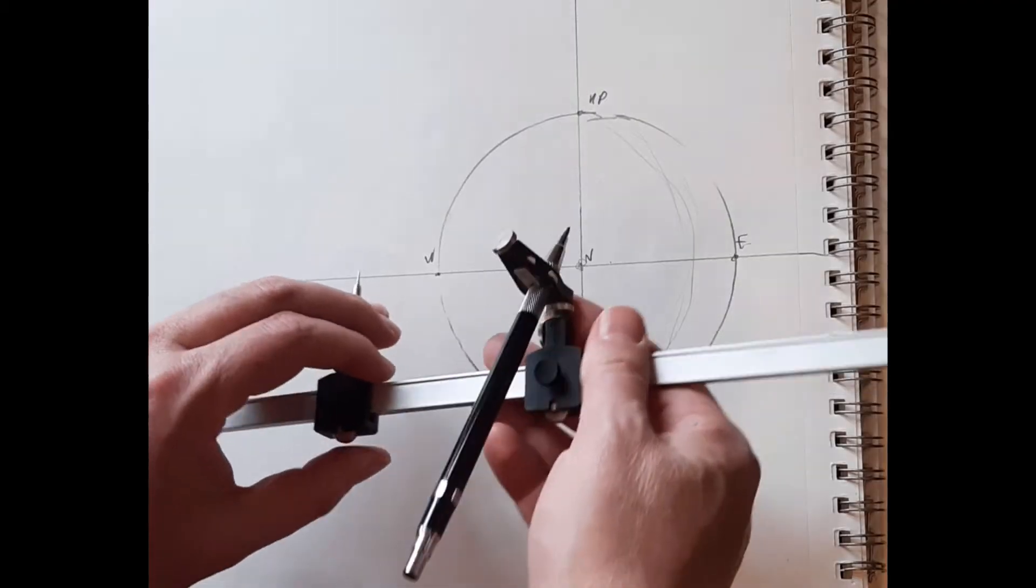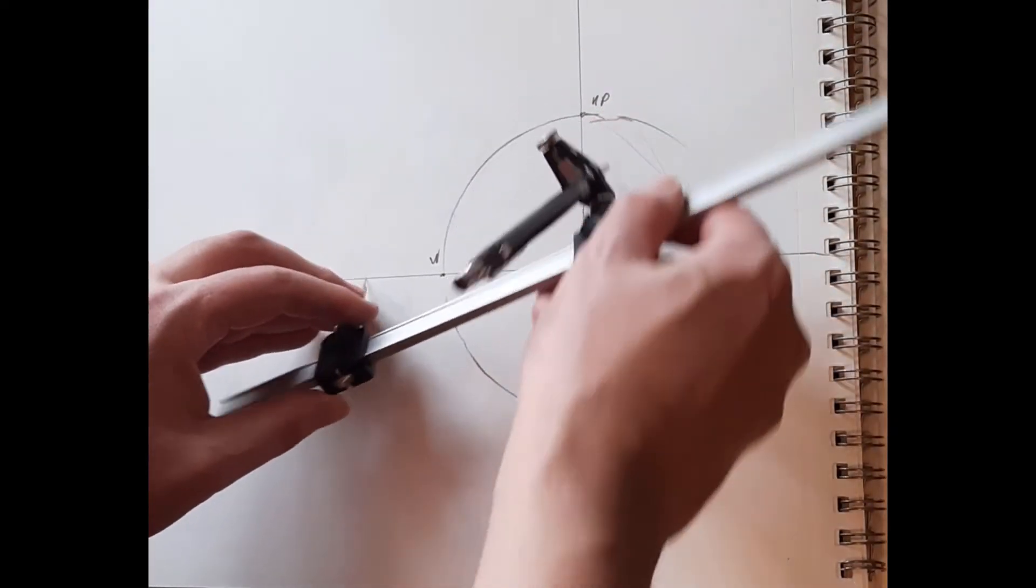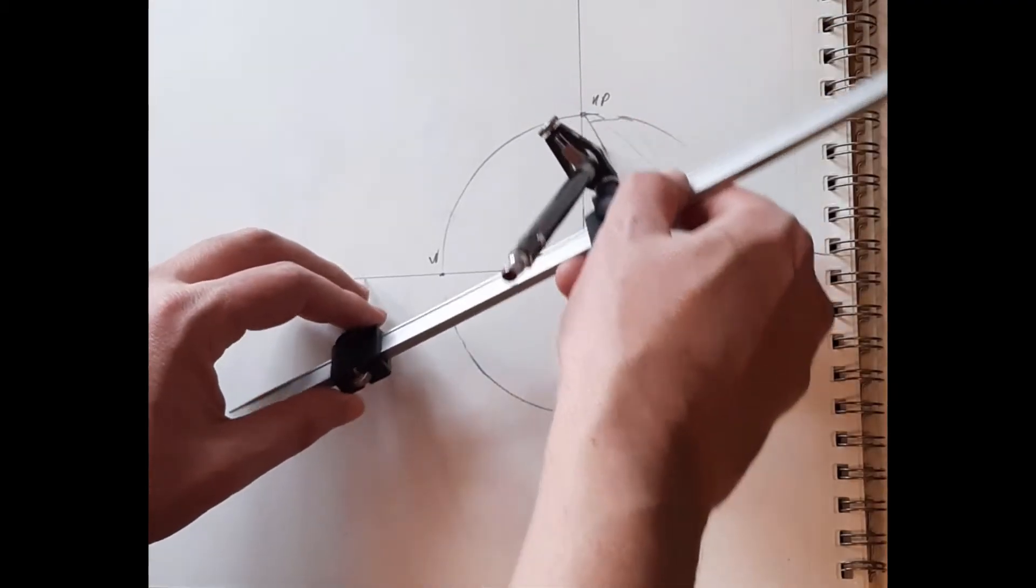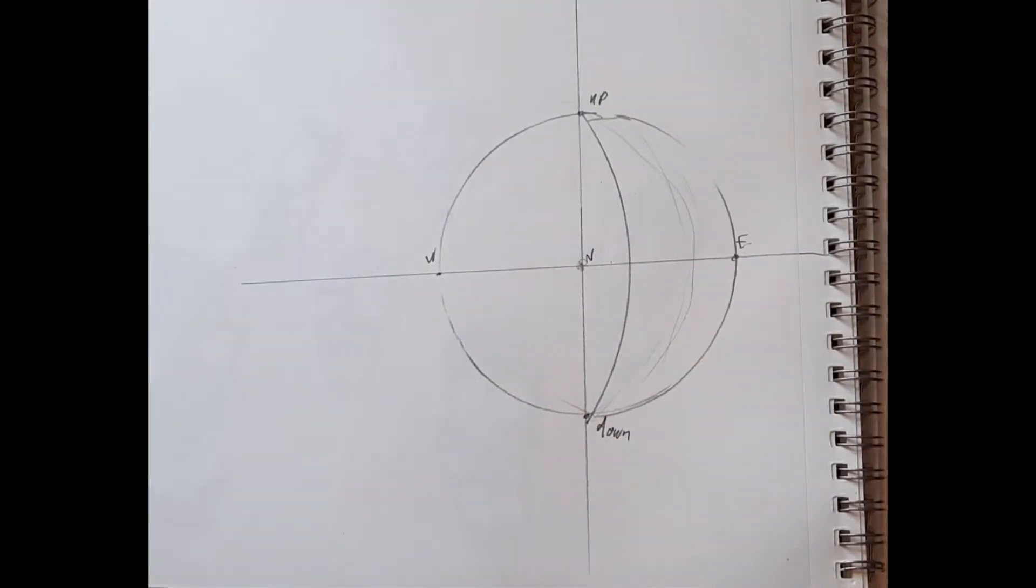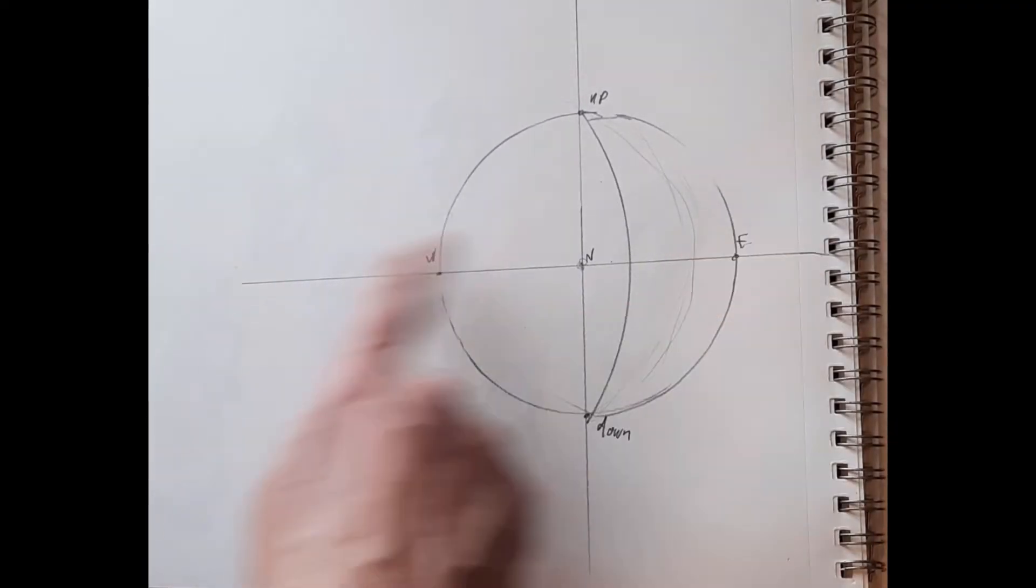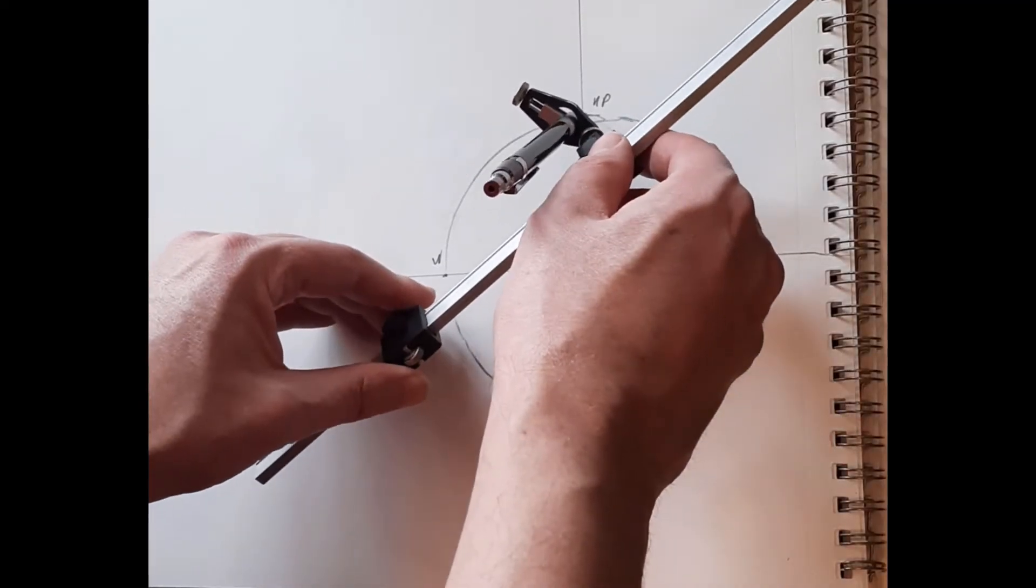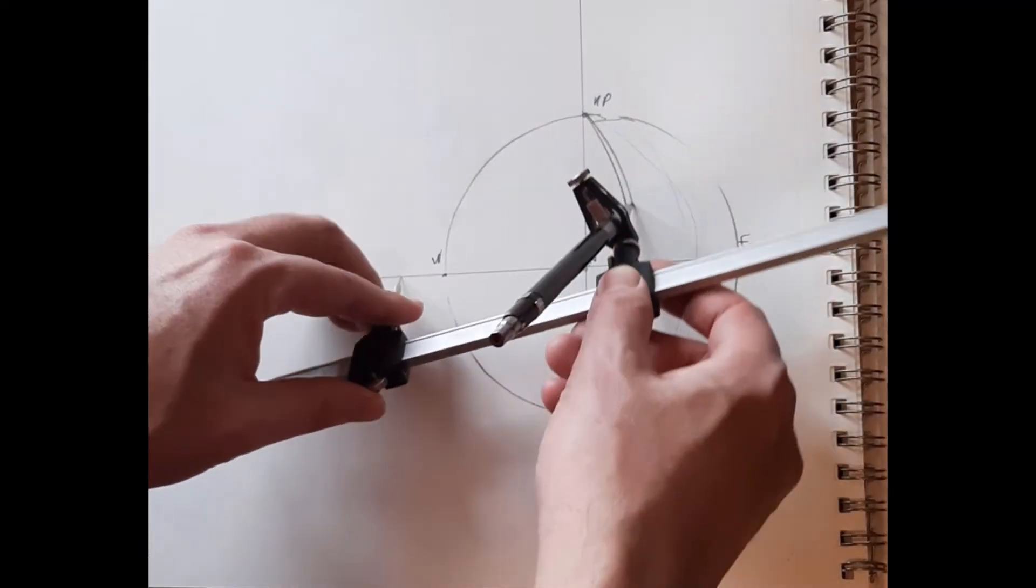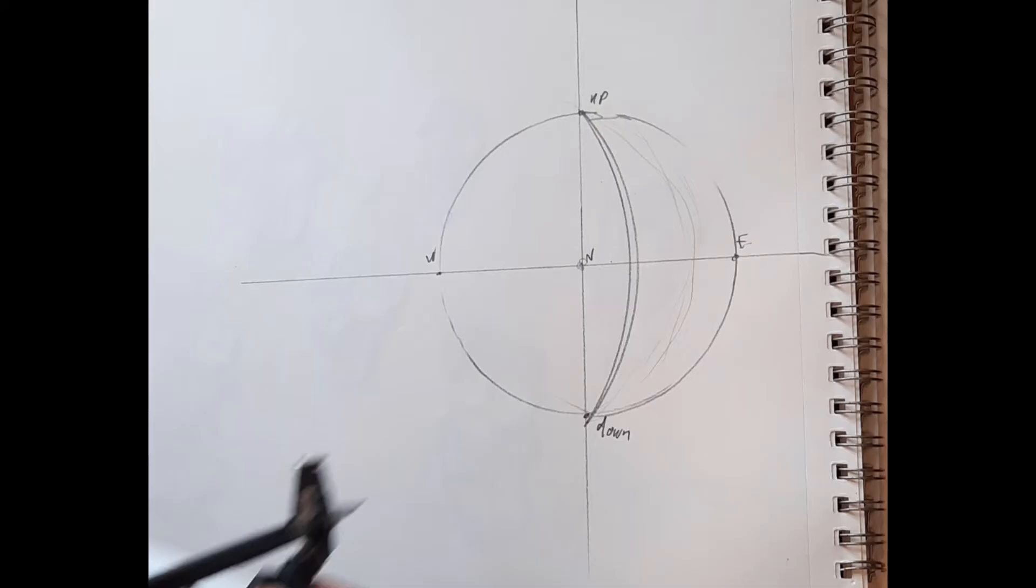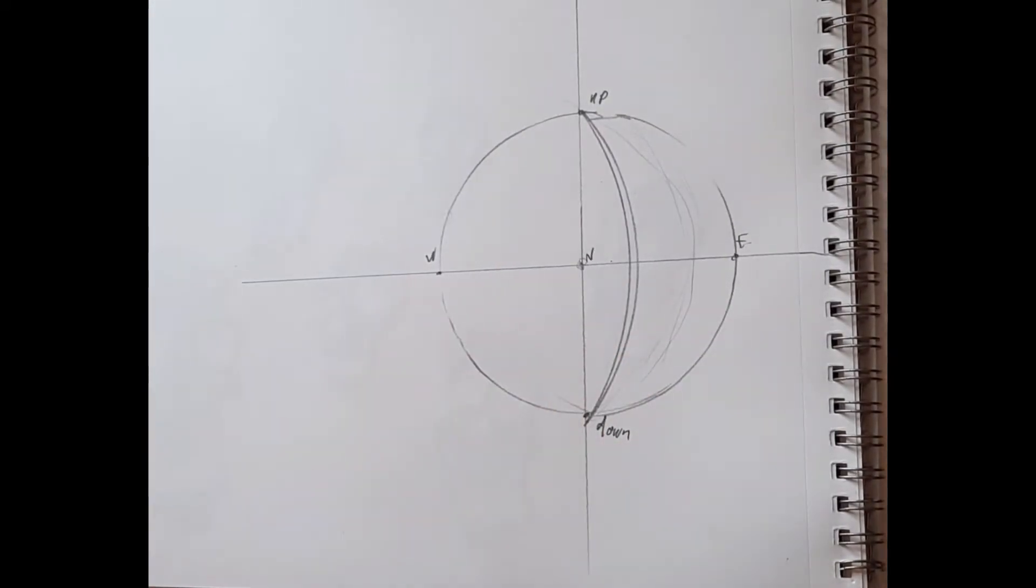And we can use our compass to draw those arcs. We just put the foot of the compass on the line going through east and west, and the drawing tip of our compass on up. And it'll make an arc that represents a vertical in this drawing system.